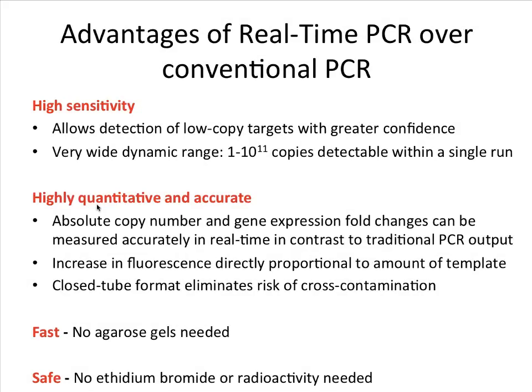There are several advantages of real-time PCR over conventional PCR. One of the major advantages is the high sensitivity, which is brought about by the use of very sensitive fluorescent labels. This allows us to detect very low copy targets with greater confidence than we could expect from a conventional PCR. We can detect a very wide dynamic range — if conditions are right, we can detect a single copy all the way up to 10 to the 11 copies.